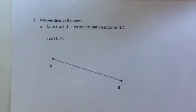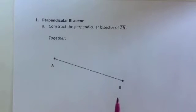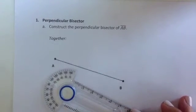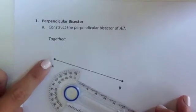This video will cover how to construct the perpendicular bisector of a given line segment such as AB. To do this construction we need to start by putting the center of our compass, this big circular part, on point A.